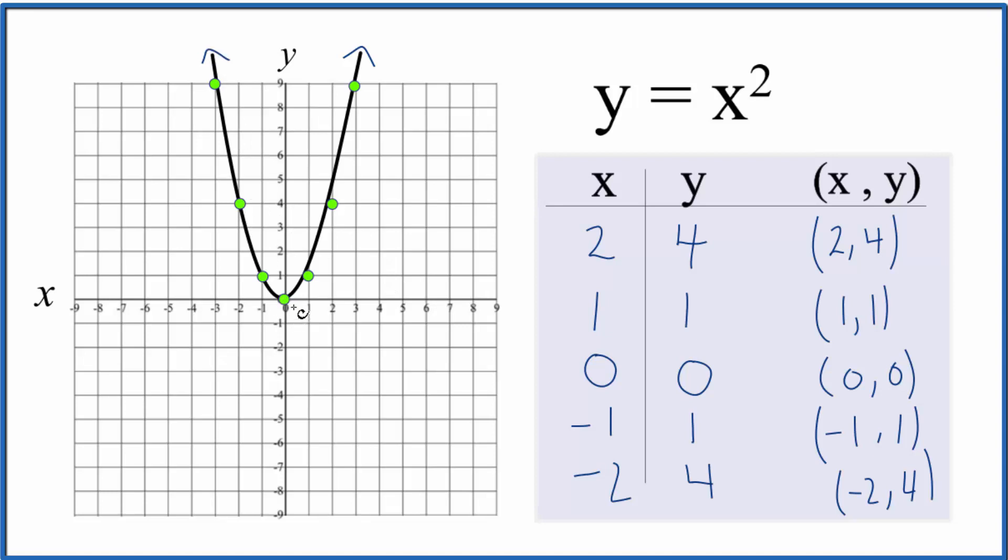That gives us the parabola here that has a vertex at 0. So y equals x squared, that's a parabola, vertex is 0. For y equals x squared plus 1, all this means is that we're just going to add 1 to each of these numbers here.